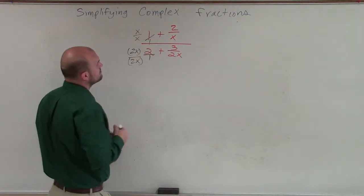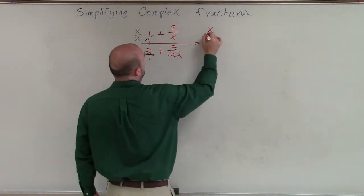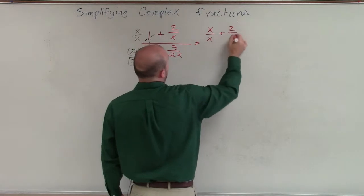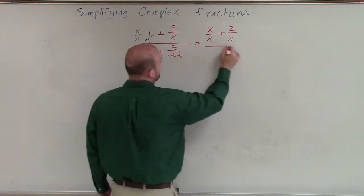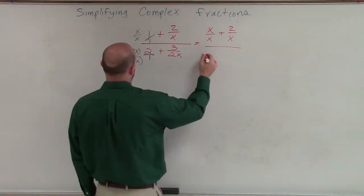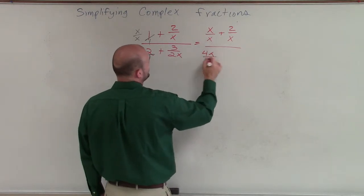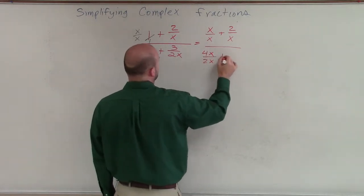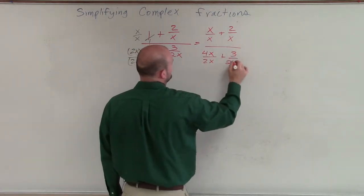Therefore, I'm now going to have an expression that's going to be x over x plus 2 over x divided by, let's see, 4x over 2x plus 3 over 2x.